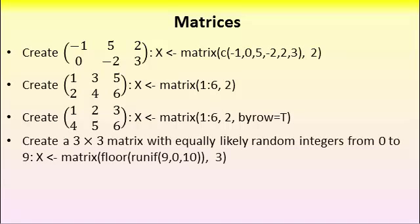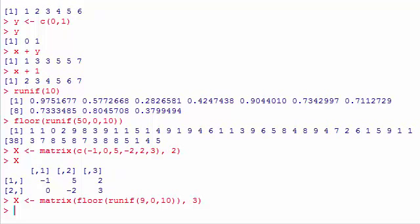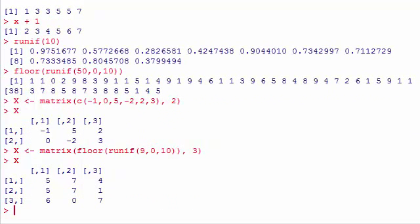So here's a useful command if you just want to create the matrix and fill it with some random integers. For example a 3 by 3 matrix with equally likely random integers between 0 and 9. No mystery here. Matrix, floor means that we round downwards. Random numbers, 9 of them between 0 and 10. And because we round downwards you will never see the number 10. Followed by a comma 3. And since my vector has 9 numbers, 3 rows, that will automatically give me 3 columns. And so it will look something like this.